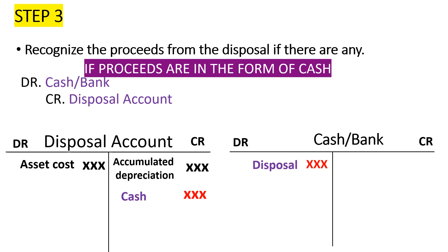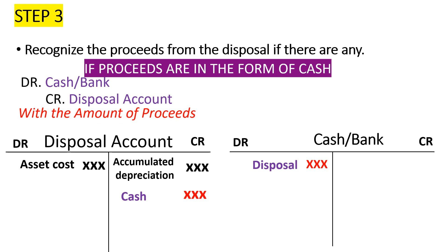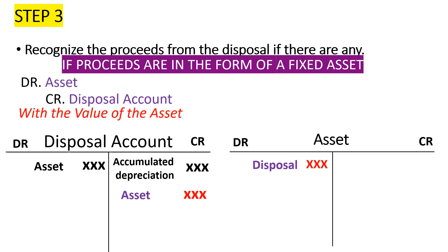If it is cash or bank, or you've received an asset, you're going to debit the cash account because the cash has increased. If the money has been put in the bank or you've received a check, you're going to debit the bank account. Or if you have received another asset in exchange for the asset you're disposing of, you create an account and debit that asset account — remember, increases in assets are debited. So you debit the asset that has been received in exchange. And for the credit, you go ahead and credit the disposal account with the proceeds from the disposal. The proceeds can either be cash, money in the bank, or the fair value of the asset received.